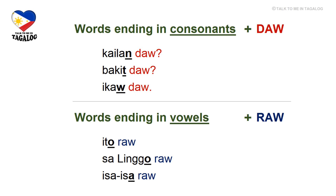For words ending in vowels, you should use raw. For example, the word ito, which means 'this' — ito ends with an o, so we use raw: ito raw. Another example is the phrase sa linggo, which means 'on Sunday' — sa linggo raw, since linggo ends with an o. The last one is isa-isa, which means 'one by one' — isa-isa raw.